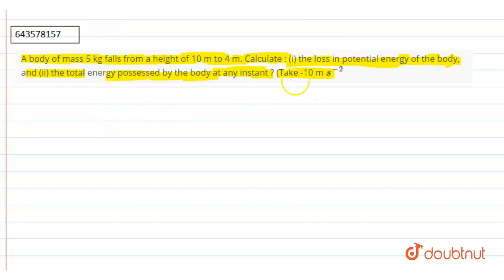In this question, we know the formula for the potential energy is mgh. So, potential energy when body is at 10 meter height: P1 equal to 5 into gravity is 10 and the height is also 10. So, it comes out to be 500 Joules.